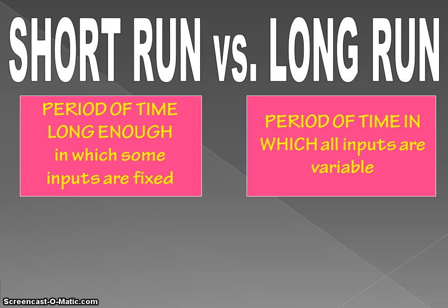When we're analyzing production, costs, profits, and all the things we're going to get into in this unit, we can analyze them in the short run or in the long run, and our analysis will be different depending on the time period. In the short run, some inputs are fixed — there are some things that can't be changed. Whereas in the long run, all inputs are variable; basically everything can be changed in the long run if you plan for it.